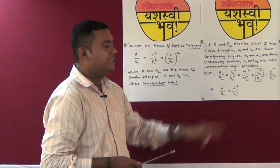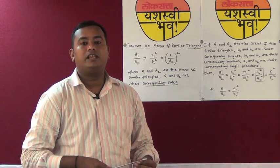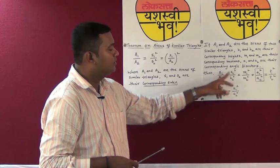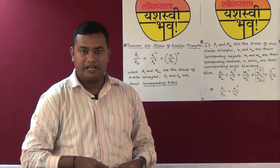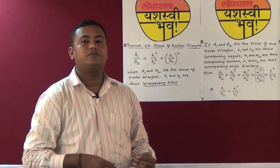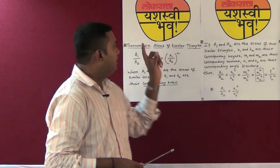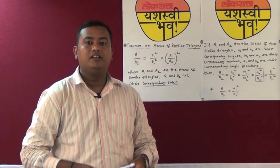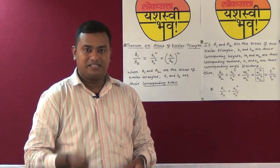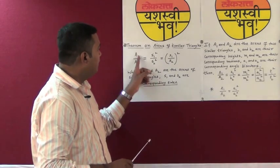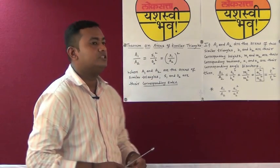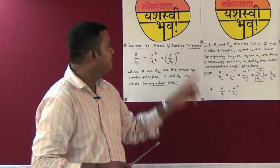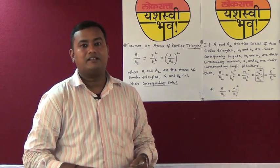Do not write the reason as 'theorem of areas of similar triangles' if you are writing the ratio of areas is equal to the ratio of the square of corresponding heights or the square of corresponding medians. The theorem on areas of similar triangles is applicable only when the triangles are similar and you are writing the ratio of areas equal to the ratio of corresponding sides.